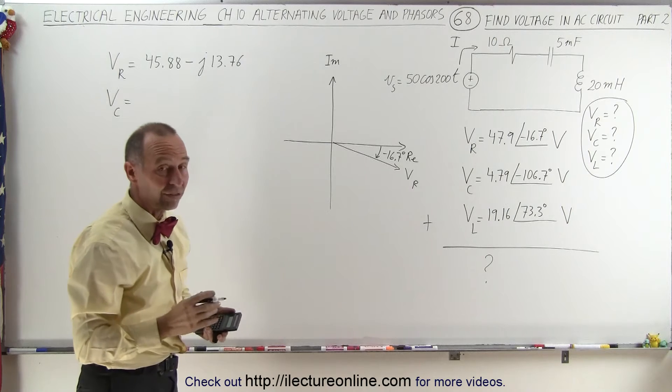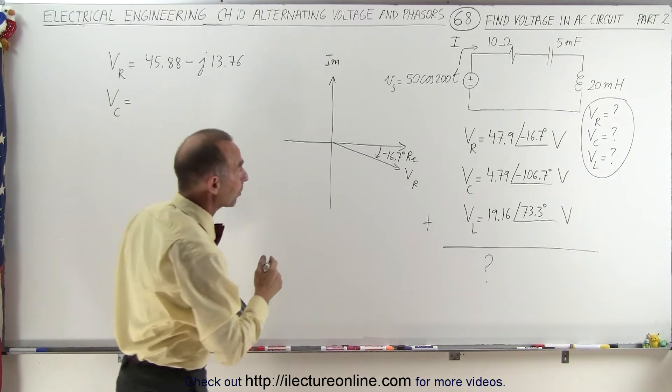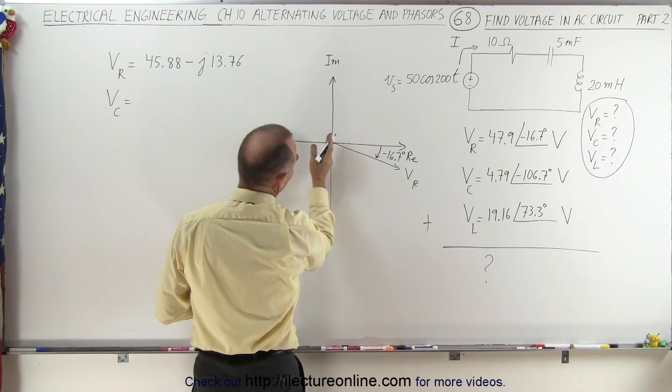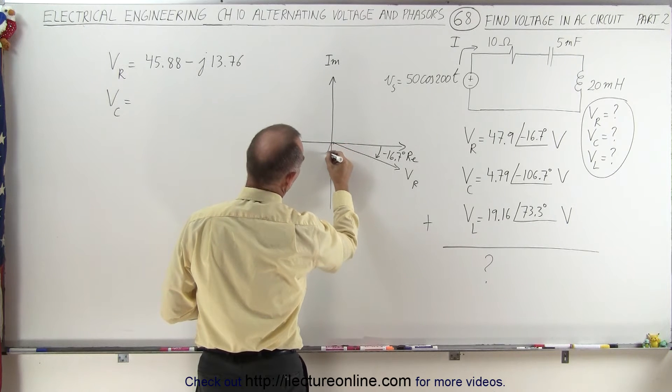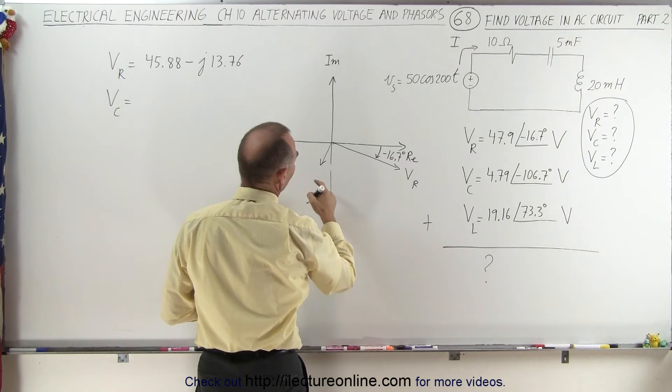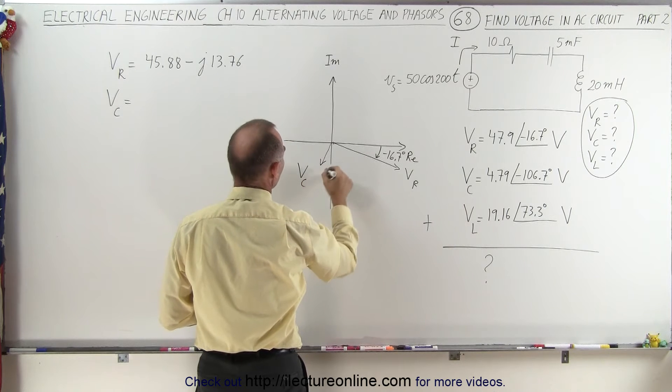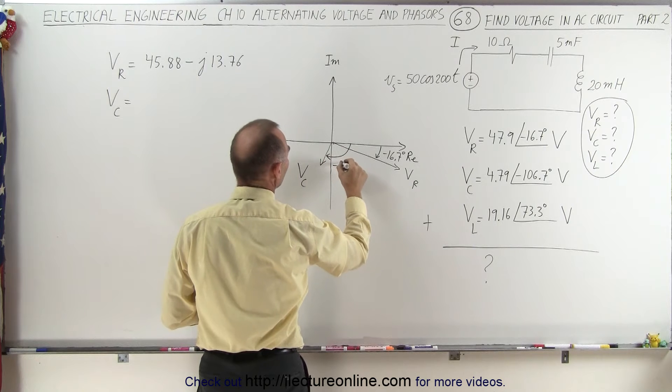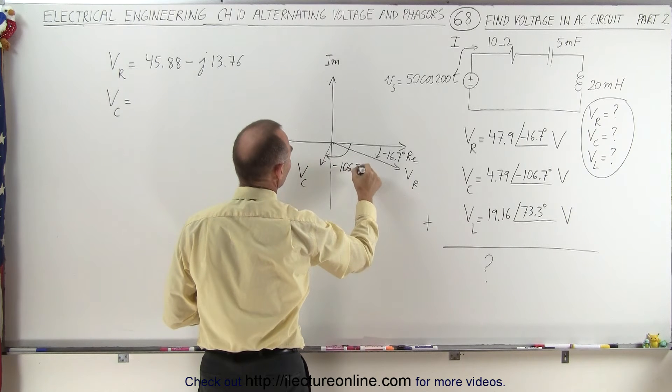Now the voltage across the capacitor has a phase angle of minus 106.7. It's only 4.79. So that has a right angle to this. And that would be the voltage across the capacitor, and there you can see that the phase angle would be minus 106.7 degrees.